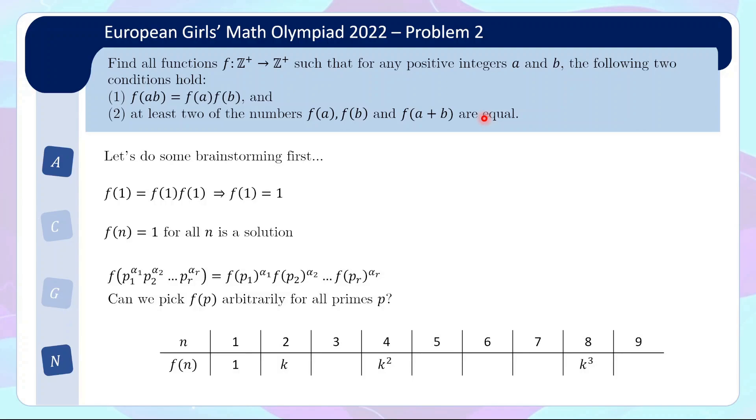So for this example, what we'll try is, can we pick f(2) and then see whether it constrains what the other primes must be? So let's say f(2) takes the value k. Firstly we know that f(4) must then be k squared and then f(8) is k cubed by the multiplicative property. Then the question is, what can f(3) be? Can we choose it freely?